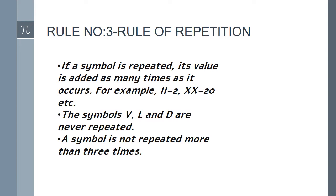Rule number 3: Rule of Repetition. If a symbol is repeated, its value is added as many times as it occurs. For example, II is equal to 2, XX is equal to 20, etc.